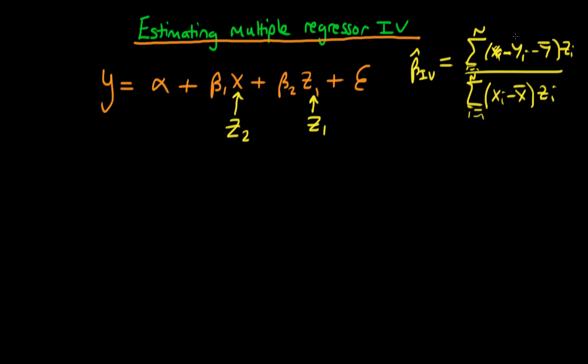And so we had an explicit form for beta hat IV. But what is it for the case when we have multiple regressors? Well the way in which we can think about it is we can think about there being three conditions which we think about as being satisfied by various variables within our model.